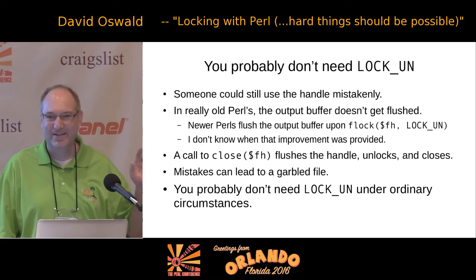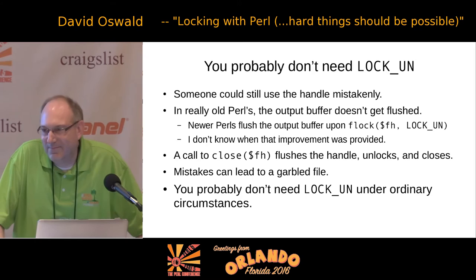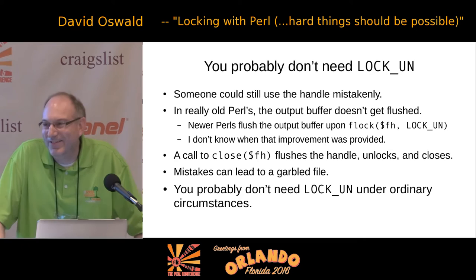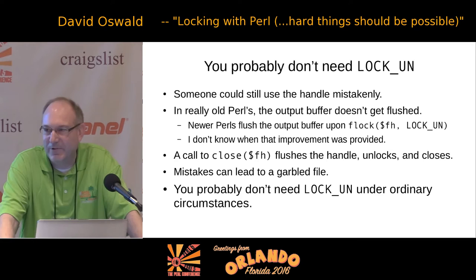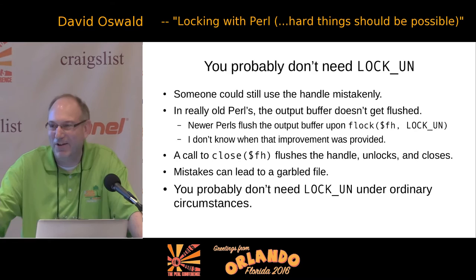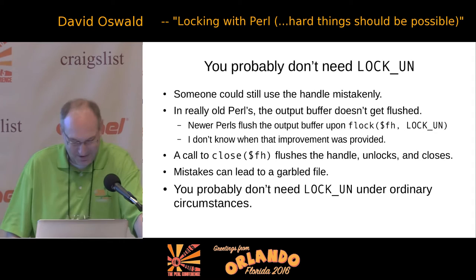Any questions so far? In the first demo with the three different types of characters — that was not locked at all. Right: I spun off three forks and allowed them to indiscriminately write to the same file at the same time. There was no locking going on. We'll look at a locked example a little later of the same code.